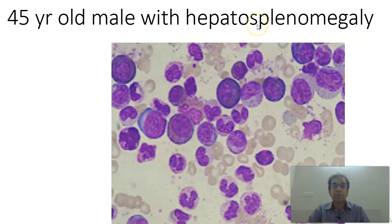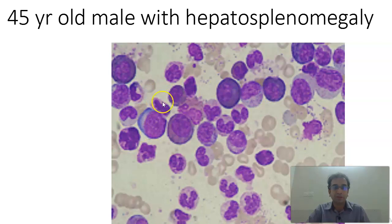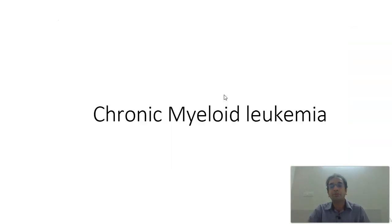Next, a 45-year-old male with hepatosplenomegaly. What you find here are a multitude of cells — neutrophils, band forms, myelocytes, metamyelocytes (indentation less than half), and blasts. I am also looking for eosinophils and basophils; one or two of those would make me comfortable calling it chronic myeloid leukemia. For CML, you will have to do translocation 9;22 — the Philadelphia chromosome is positive.